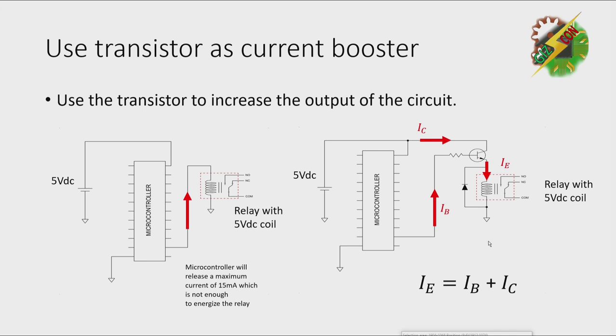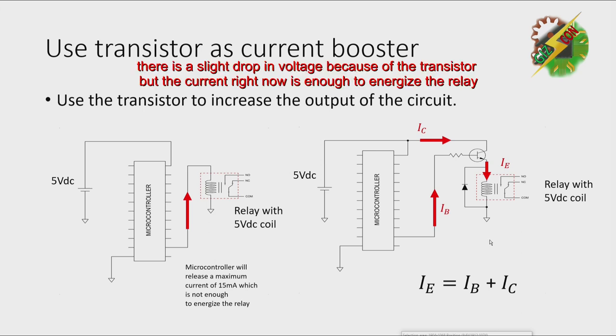This means that the current at the relay is now bigger. The transistor is used to increase the current at the relay. The diode in reverse bias is used for stored energy protection.